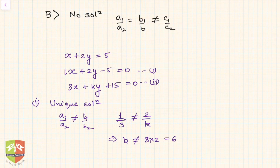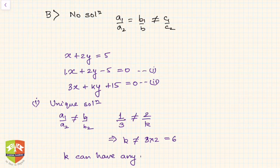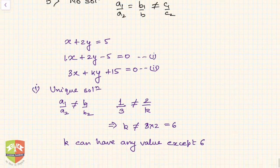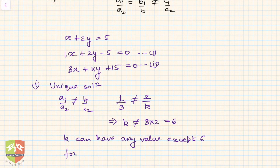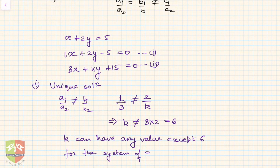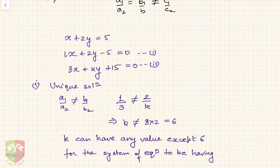So k must not be equal to 6. This means k can have any value except 6 for the system of equations to have a unique solution.